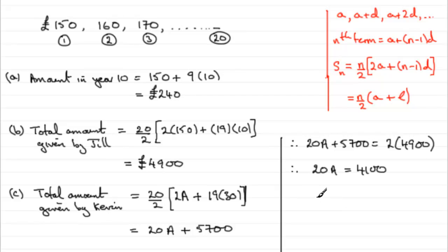And, then, if you divide both sides by 20, a will equal 4,100 divided by 20, which is 205. Okay, so, that brings us to the end of this question.